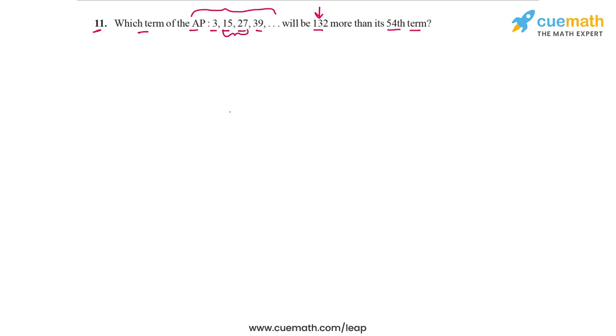First, let's discuss the more visual approach. Look at this number line kind of representation for the arithmetic progression. We see the first term, second term, third term, fourth term, and so on. Here's the 54th term of the AP.